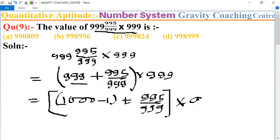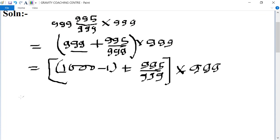Multiply 999. Now we multiply all the three terms, so the first one becomes 999000.